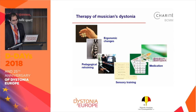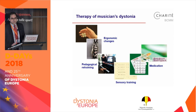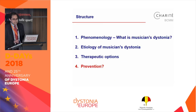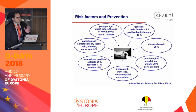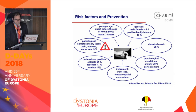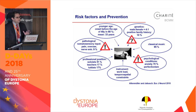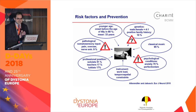With all these therapeutic options, we are able to help the vast majority of our patients. However, playing is nevertheless often still slightly impaired under therapy, and that is the problem. Therefore prevention is so important. Remembering all the risk factors I presented, we think active prevention is possible and necessary in mainly two areas: local pain and overuse syndromes, and anxiety and perfectionism. Genetic risk counseling is also possible but is not really a preventive strategy.